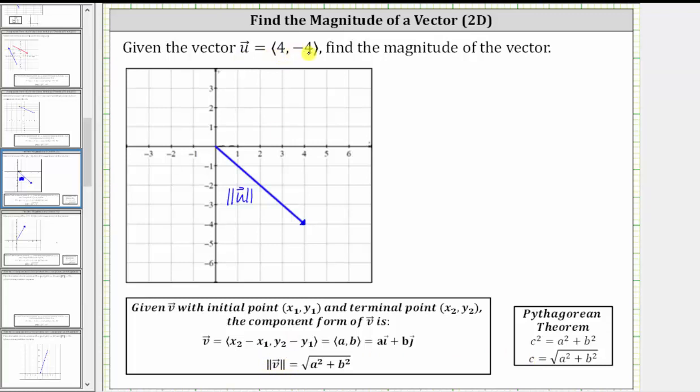So the x component is positive four because the change in x or the horizontal displacement from the initial point to the terminal point is right four units. And then from here, the vertical displacement or vertical change is down four units to reach the terminal point, which is why the horizontal component is positive four and the vertical component is negative four.